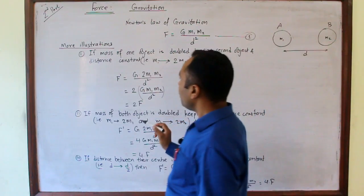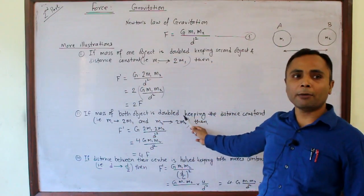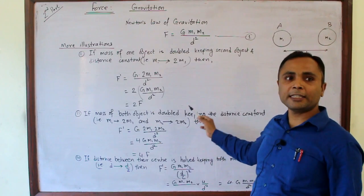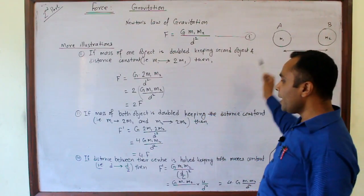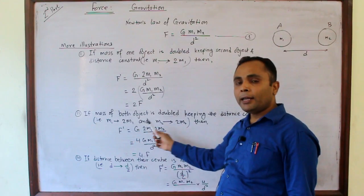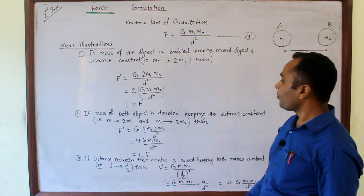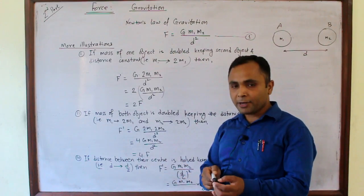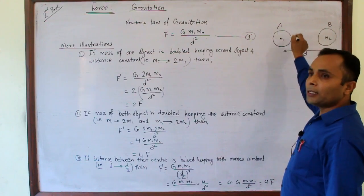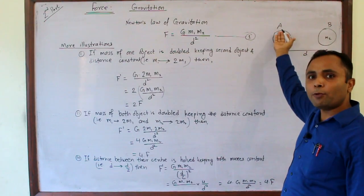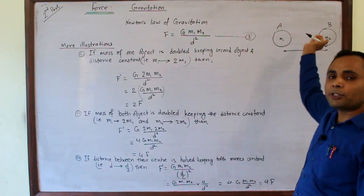Then what will happen if the mass of both objects is doubled? Both masses are doubled: M1 is to be replaced by 2M1 and M2 by 2M2. The force of gravitation at that condition, when mass of A becomes 2M1 and mass of B also becomes 2M2.